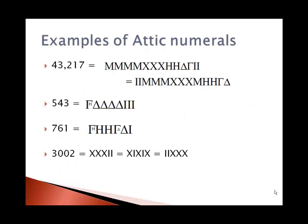Here are some examples of Attic numerals. 43,217, I've written this a couple of different ways. One is with four mu's for the four 10,000s, three chi's for the 3,000s, two eta's for the 200s, one delta for the 10, and then the seven is represented by the gamma and the two iotas. Since the Attic system is not positional, I can take those symbols and rearrange them in any order, as long as I have the correct symbols and get the same number.